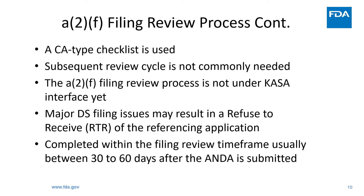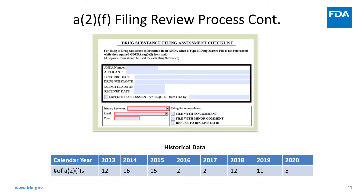Here are some features of the A2F process. It follows a shorter timeline and helps determine the filing status of an ANDA, though the workload is not under the CASA interface yet. In an A2F review, when no CA type comment is entered, or only minor CA type comments are entered for the drug substance module, a green light will be given for ANDA filing. On the other hand, if there are major drug substance filing issues, a refuse-to-receive finding will result for the referencing application. The A2F process only represents a small amount of the DL API CA type workload.